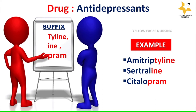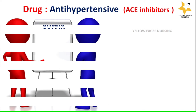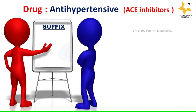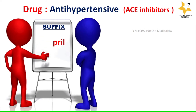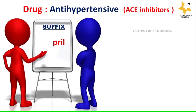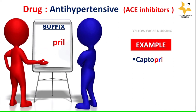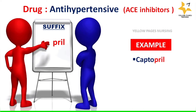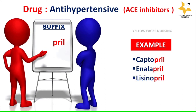Next comes the group antihypertensives, under which come ACE inhibitors, which end with the suffix '-pril'. Examples are captopril, enalapril, lisinopril, etc.